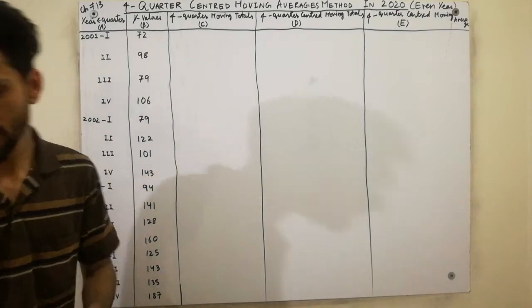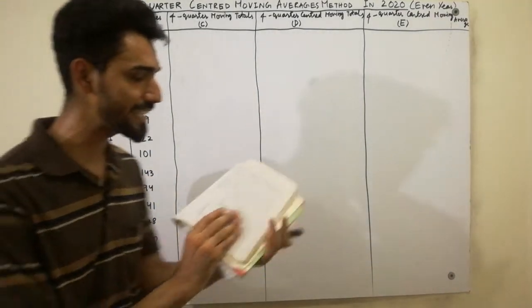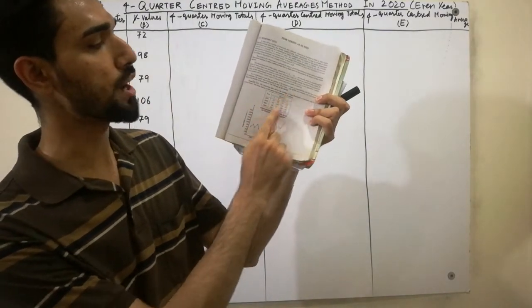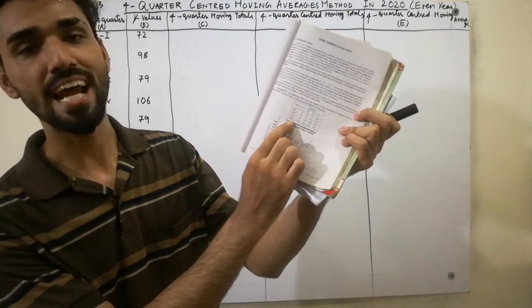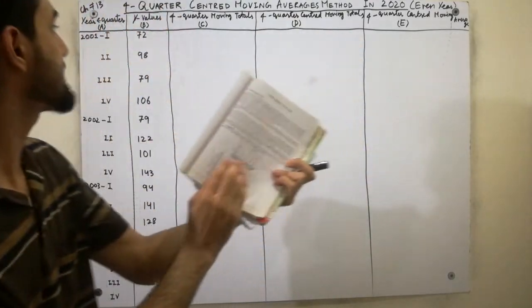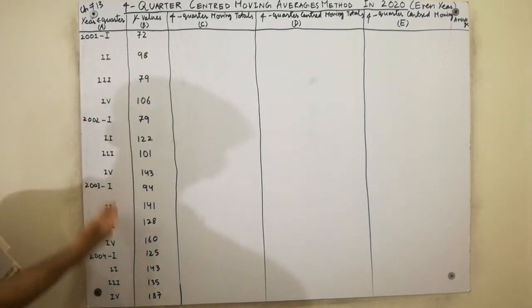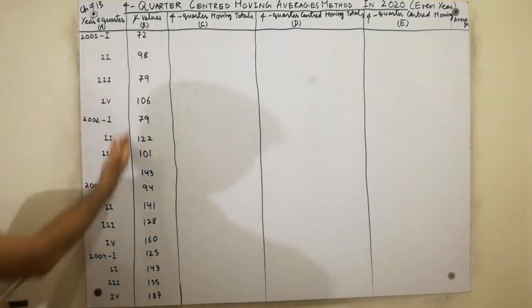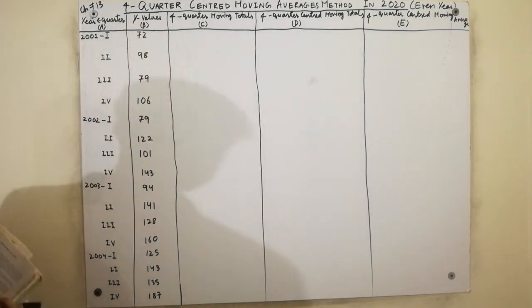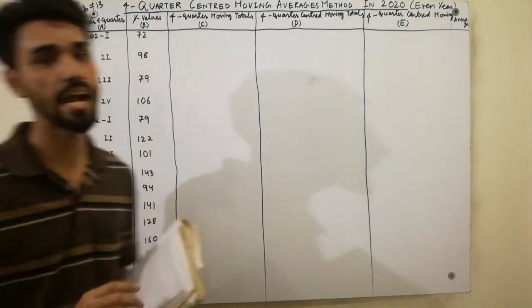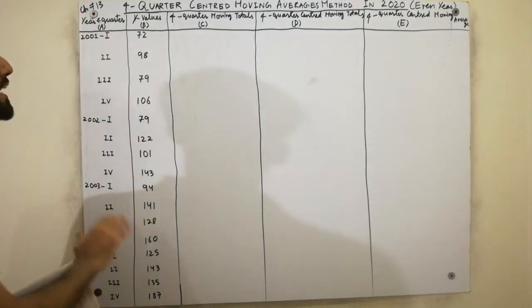In the paper pattern, you will be given year and quarter values. You will have to arrange that data by year and quarter: 2001 first, second, third, fourth quarter, and so on. For example, the first value is 72, the second quarter is 98. You must arrange the data in order by time.